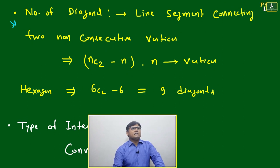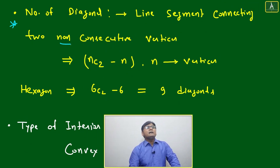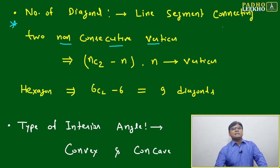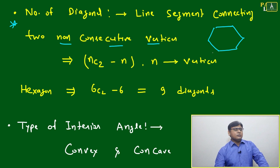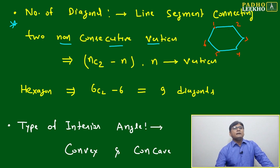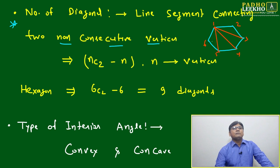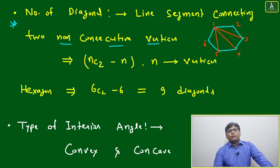Now, how to find the diagonal — a diagonal is a line segment connecting two non-consecutive vertices. For example, in a hexagon with vertices one through six, vertex one will connect with three, four, or five — those three connections become diagonals, not with the consecutive vertices two and six.